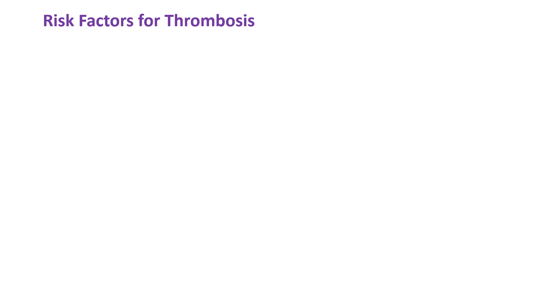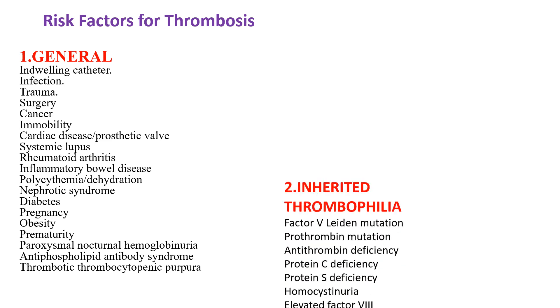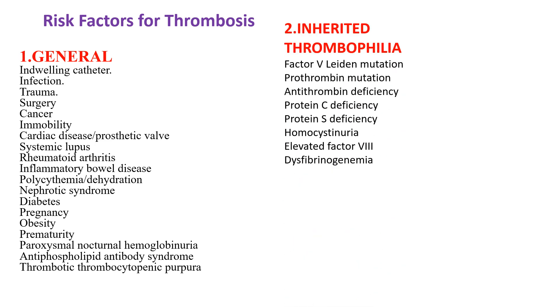We classify risk factors for thrombus into four categories: general, inherited causes, anatomic factors, and medications. From the general category, indwelling catheter, infection, trauma, surgery, malignancy, immobility, and other causes can be mentioned.